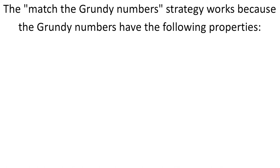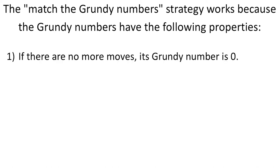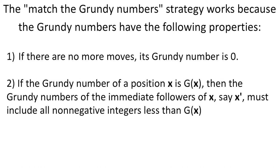What are the properties of the Grundy numbers which make our matching strategy so successful? First, when the game is over, the Grundy number is zero. The second condition is that the Grundy numbers of the immediate followers of x must include all non-negative integers less than the Grundy number of x. And the third condition is that all of them must be different from the Grundy number of x itself.